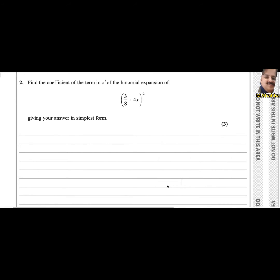Coefficient of the term in x to the power 7 of binomial expansion of 3 over 8 plus 4x whole to the power 12. Give your answer in simplest form.